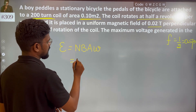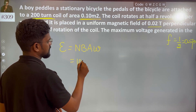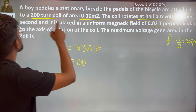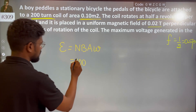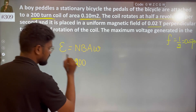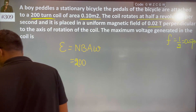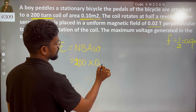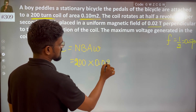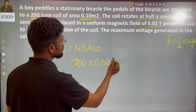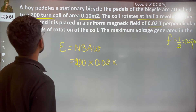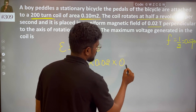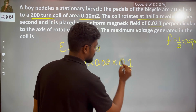The number of turns N is given as 200. The magnetic field B is 0.02 tesla. And the area A is 0.1 square meters.